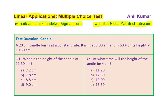The question is based on burning a candle. A 20-centimeter candle burns at a constant rate. It is lit at 8 a.m. and is 60% of its height at 10:30 a.m. Based on this information, we have two questions: Question one — what is the height of this candle at 11:30 a.m.? And question two — at what time will the height of the candle be 4 centimeters? You can pause the video, answer the question, and then look into my suggestions.